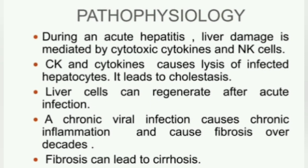Pathophysiology: During acute hepatitis, liver damage is mediated by cytotoxic cytokines and natural killer cells. Cytokines cause the lysis of infected hepatocytes, leading to cholestasis. Liver cells can be regenerated after acute infection. A chronic viral infection causes chronic inflammation and fibrosis over decades, and fibrosis can lead to cirrhosis.